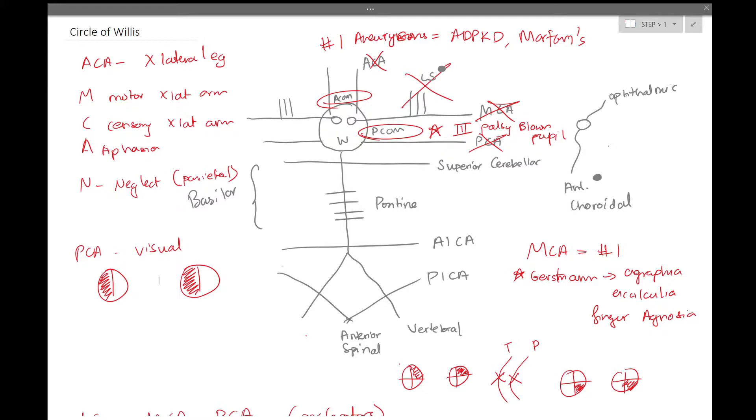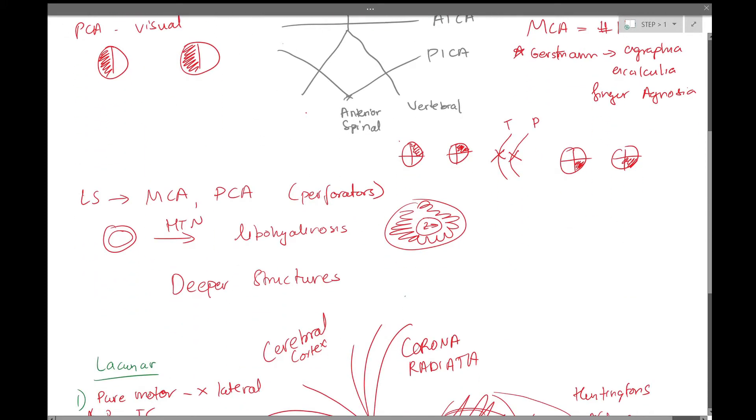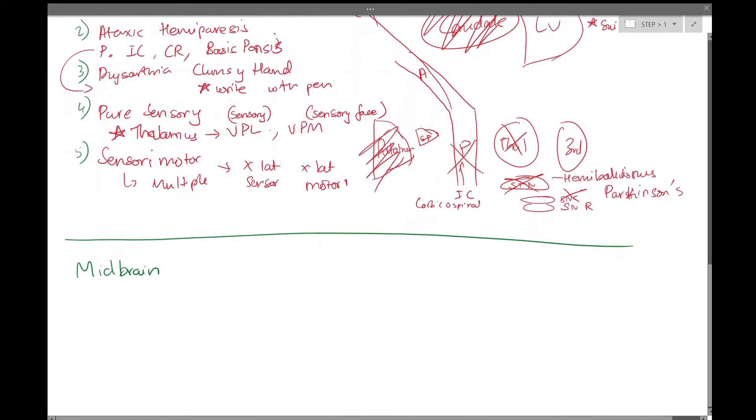However, the PCA also supplies the midbrain as well as some cerebellar structures or cerebellar fibers in the midbrain.